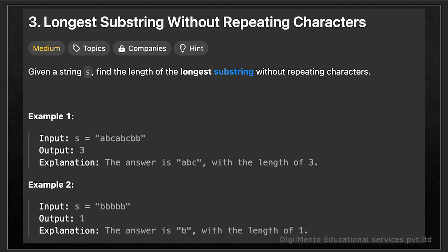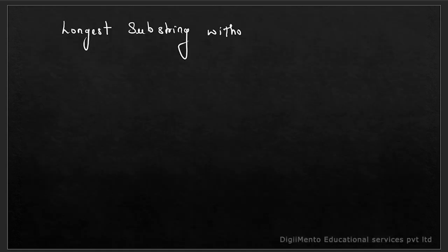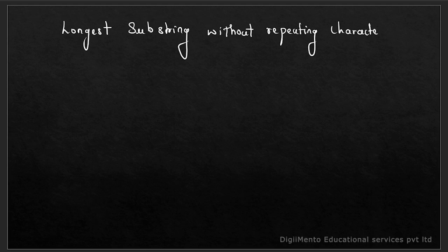Now let's understand what the problem is and how to solve it — which algorithm to use. First we will see it in a general way, then in a better way, and after that we will completely optimize it based on time complexity and space complexity. Our problem is longest substring without repeating characters. Let's understand what a substring is. This is our string: A, C, D, B, Z, A, B, C, D.